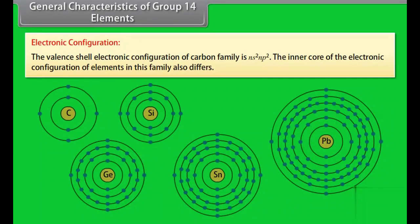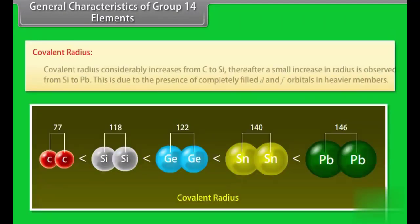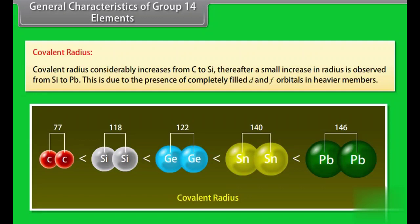General characteristics of group 14 elements. Electronic configuration: the valency shell electronic configuration of carbon family is ns2 np2. The inner core of the electronic configuration of elements in this family also differs. Covalent radius considerably increases from carbon to silicon. Thereafter, a small increase in radius is observed from silicon to lead. This is due to the presence of completely filled d and f orbitals in heavier members.